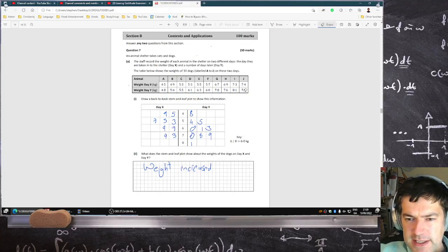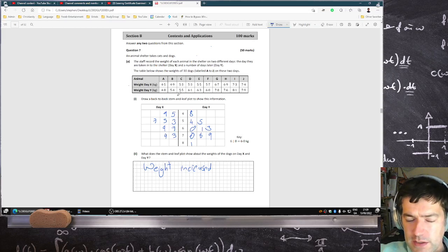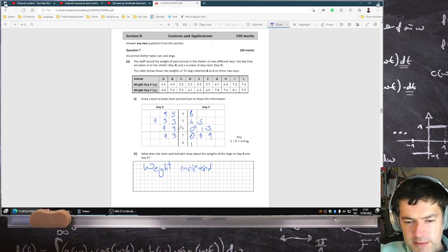The first part was to make the stem and leaf graph. That's not too difficult, just make sure you put them in order. So 4.5 first, 4.9 second and so on.